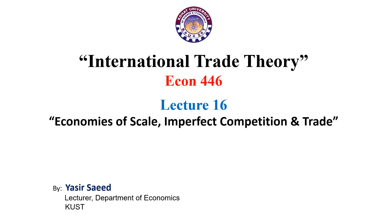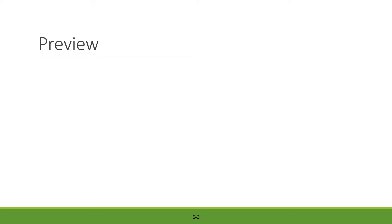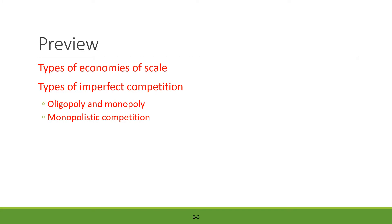Hello everyone and welcome to the class of International Trade Theory, ECON 446. I'm Yasser, and today we are going to study economies of scale, imperfect competition, and international trade. So far, we have already covered the types of economies of scale — specifically external economies of scale and internal economies of scale — and we have also covered monopoly, a type of imperfect competition, and oligopoly, which is somewhat identical to monopoly.